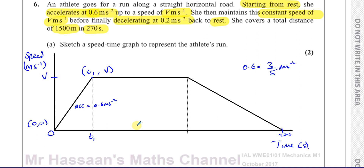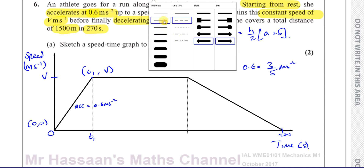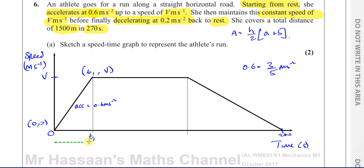The shape here is basically a trapezium. Many people split it into triangles and a rectangle, but I prefer the trapezium formula. The area of a trapezium is H/2 times (A + B), where H is the distance between the parallel sides — which is V in our case — and A and B are the lengths of the two parallel sides. One of them is clearly 270, the total time. The other parallel side is the length we need to find.